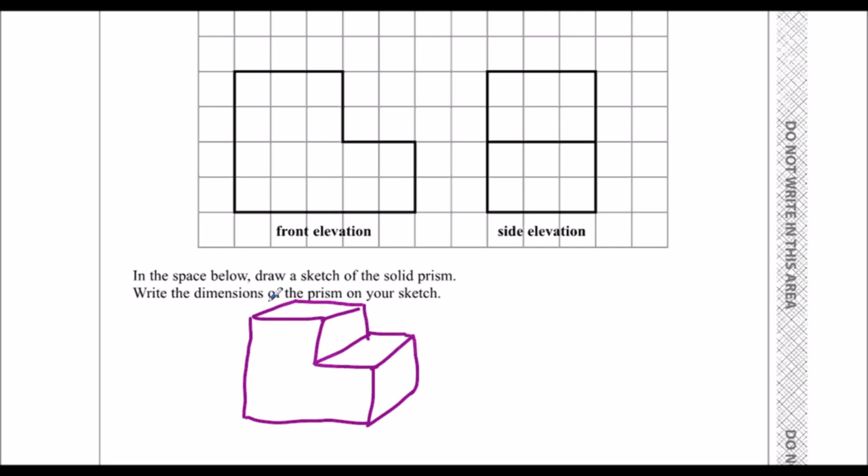Write the dimensions on your sketch. So you can see it's 5 along the bottom here, so 5 centimeters because it's a centimeter grid. It goes 4 up, so that's 4 centimeters, then 3 along, 2 down, 2 across, and then 2 down.